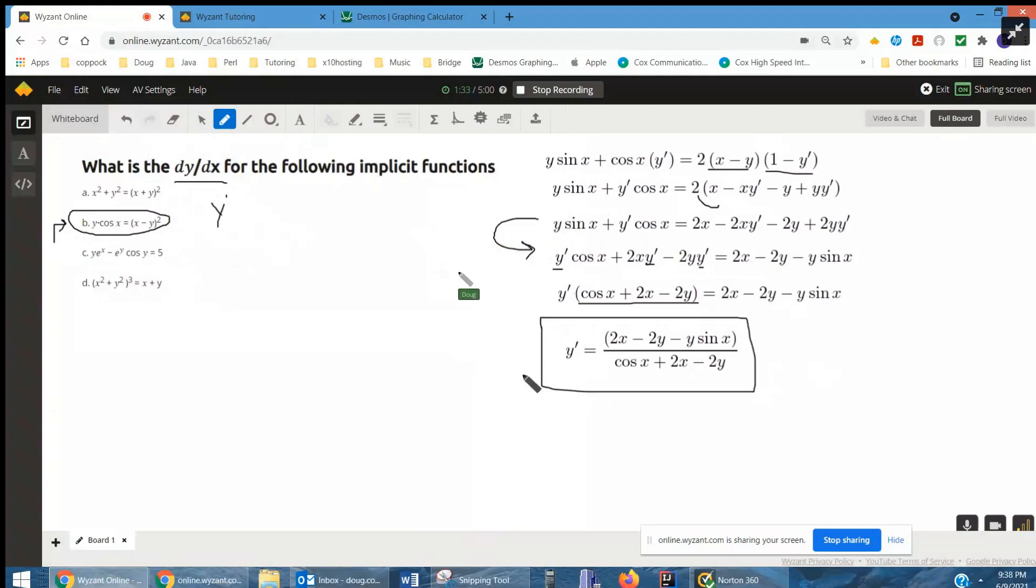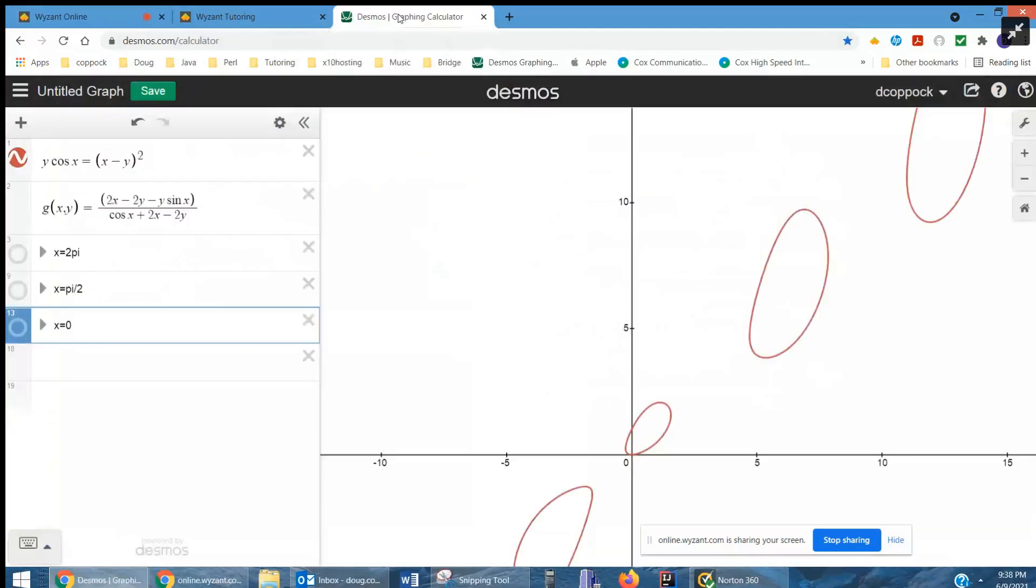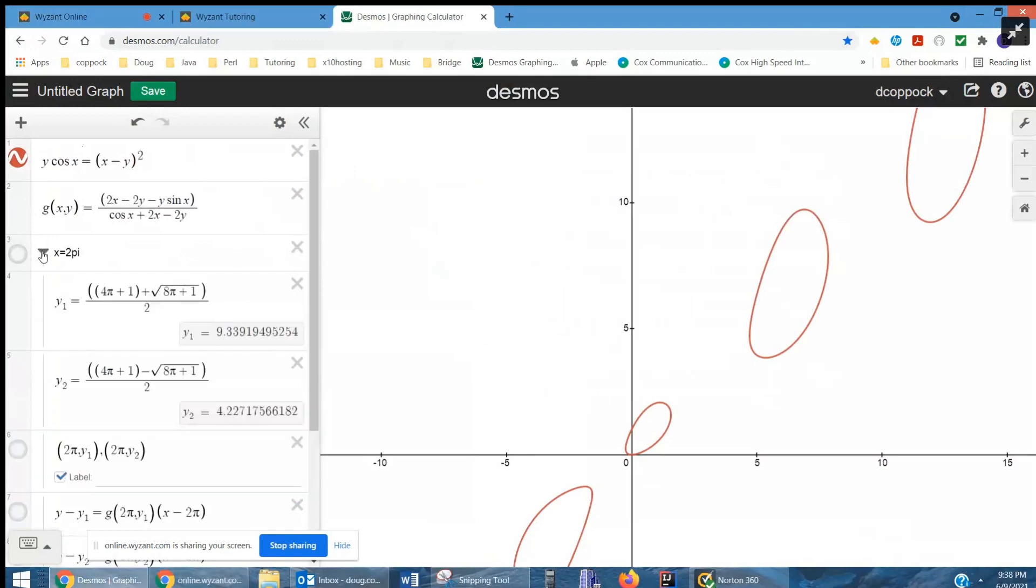Now, it might be interesting to use Desmos to see if we can actually show that that's working. So how about we try to write the equations of the tangent lines to the original function when x is equal to 2π? Well, when x is equal to 2π, you can put 2π in for x and solve for y and you actually have to use the quadratic formula.